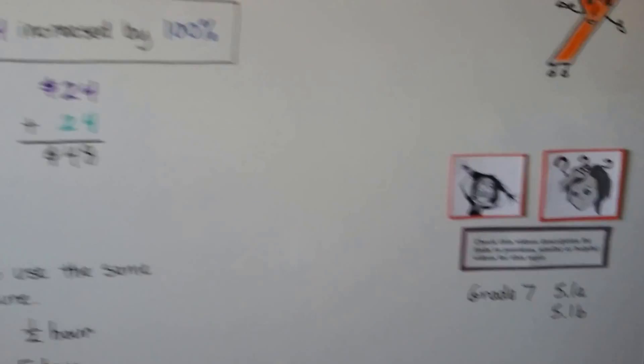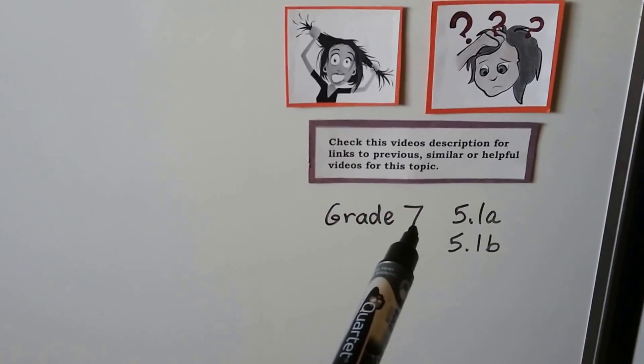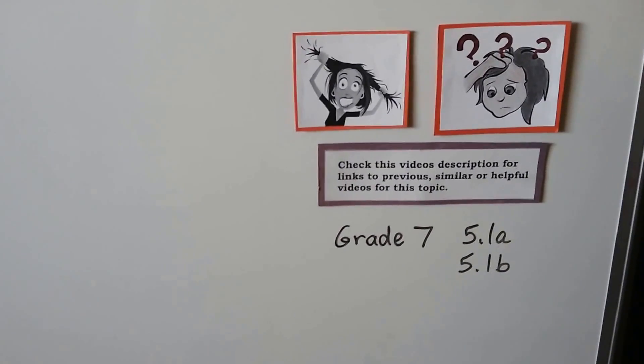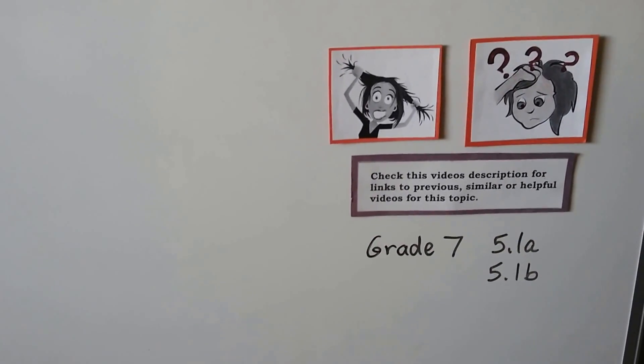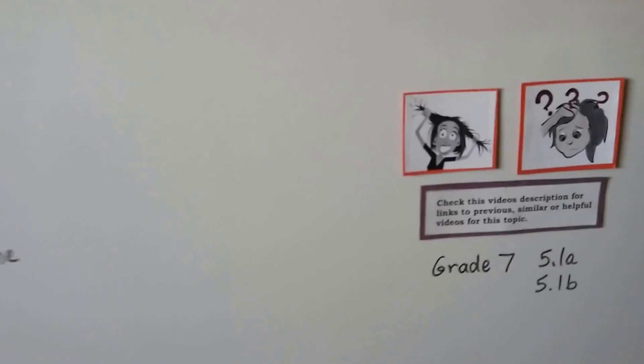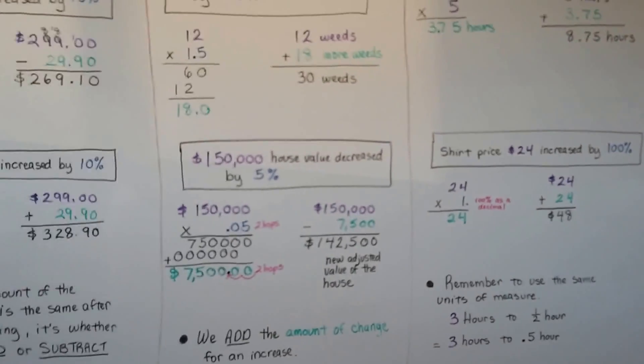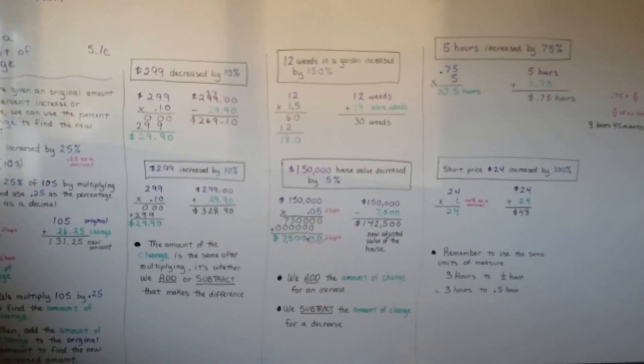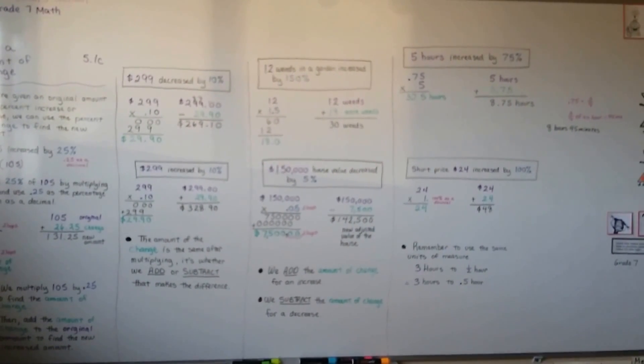Now, if you're very confused and you missed some videos, you can check this video's description. There will be links to the grade 7 videos, the previous ones of 5.1a and 5.1b, where we first started talking about increases and decreases. So now you know how to use the percent of change to find an increase or a decrease. I hope you have a great day, and I'll see you next video. Bye!